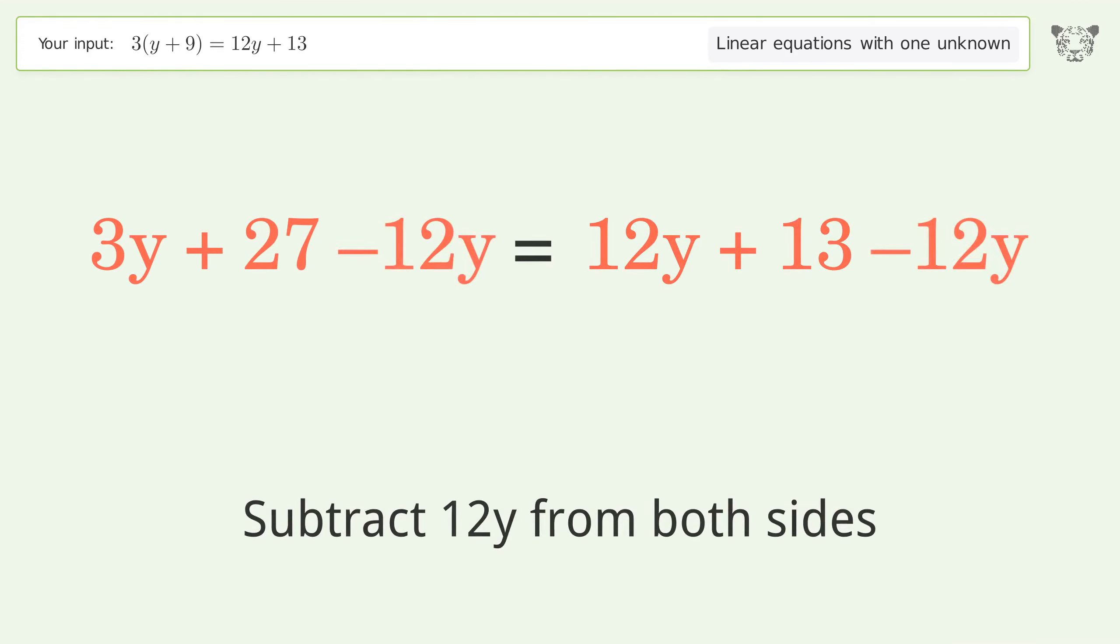Group all constants on the right side of the equation. Subtract 27 from both sides. Simplify the arithmetic.